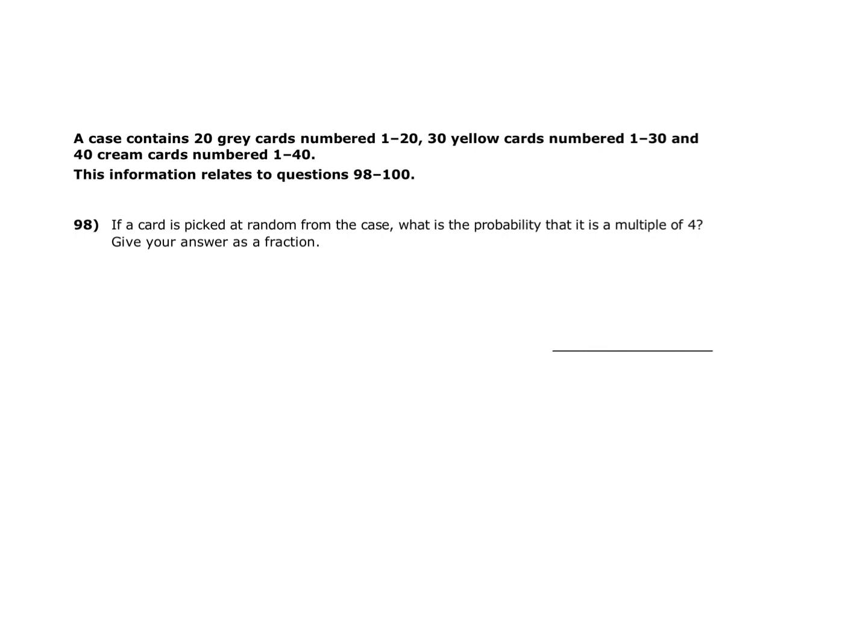A case contains 20 grey cards numbered 1 to 20, 30 yellow cards numbered 1 to 30, and 40 cream cards numbered 1 to 40. This information relates to questions 98 to 100. Question 98: If a card is picked at random from the case, what is the probability that it is a multiple of 4? Give your answer as a fraction.